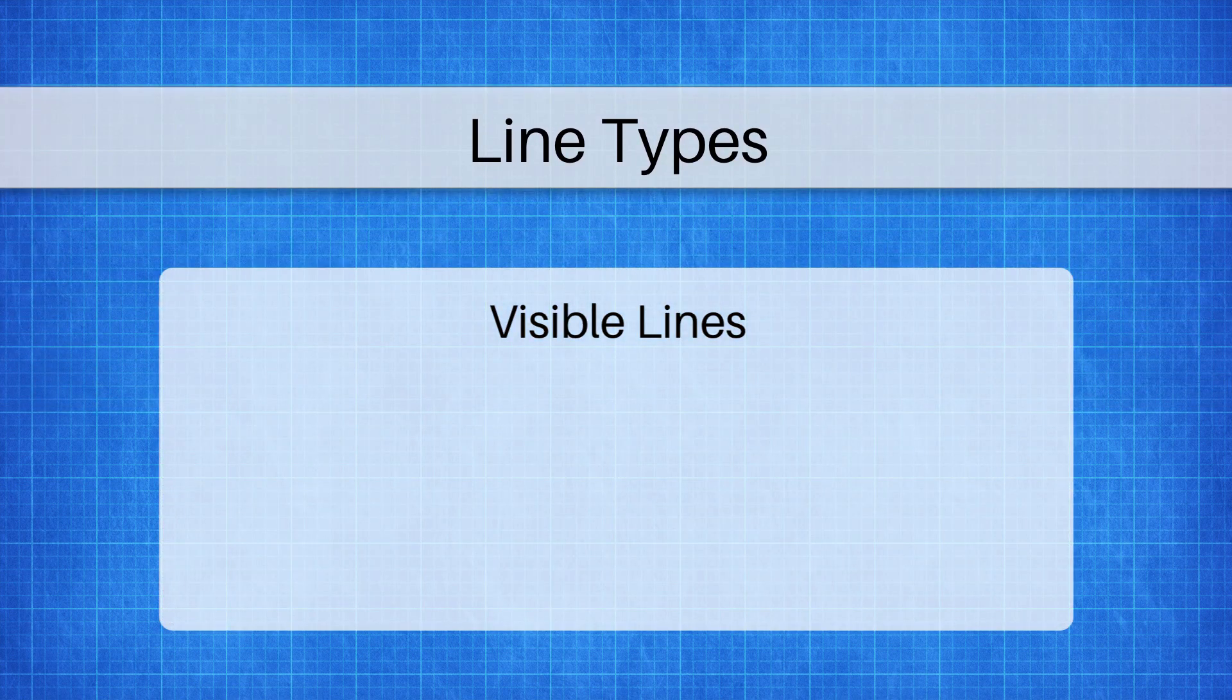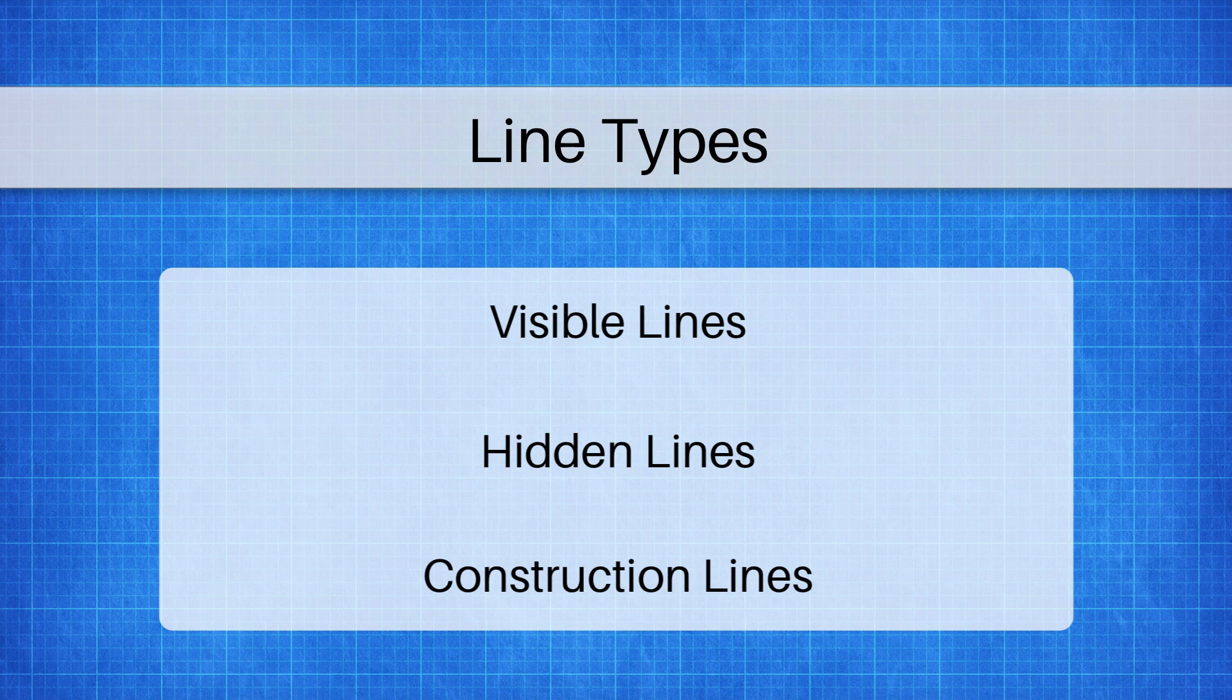They are visible lines, hidden lines, and construction lines. Each of these line types has a different use and we'll go over those in just a moment.